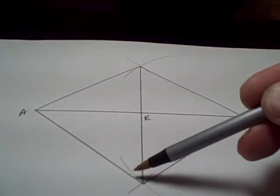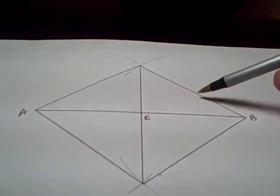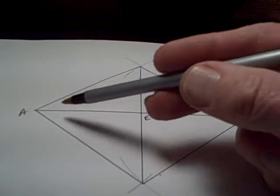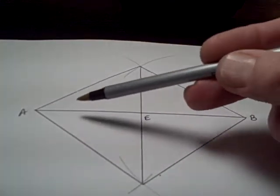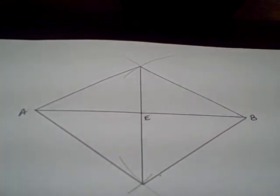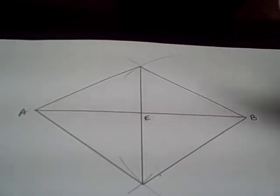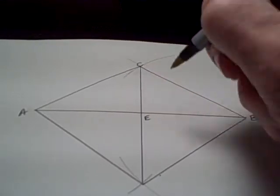Now I have a number of triangles here. I have this big triangle pointing towards the left, this big triangle pointing towards the right. I've got one pointing up, one pointing down. I've got four little triangles in the middle. Concentrate for the time being on the triangle. If I label this C and label this D.